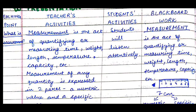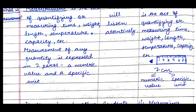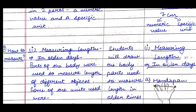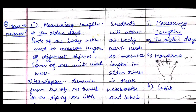We'll write: 'Measurement is the act of quantifying or measuring time, weight, length, temperature, capacity, etc.' Then we give an example — we'll draw or show a scale and tell them the scale is 7 centimeters. Seven is the numeric value and centimeter is the specific unit used to denote the measurement. Students already know centimeters, meters, and kilograms from buying things at the market.